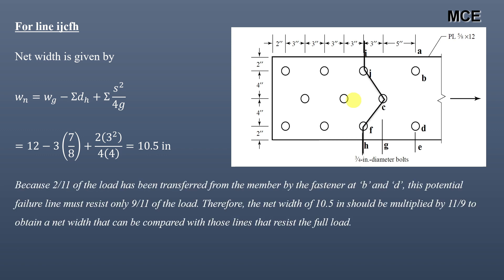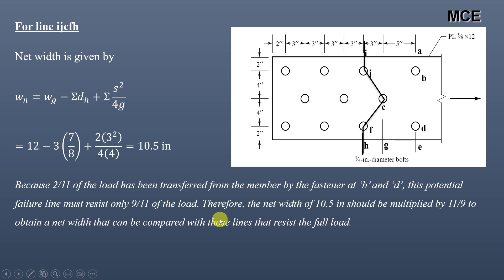Before the load reaches failure line I-J-C-F-H, some load would already have been transferred by the fasteners at B and D. There are 11 fasteners total in this connection, meaning this potential failure line resists only 9/11 of the load. Therefore we multiply the net width of 10.5 inch by 11/9, giving an adjusted net width of 12.83 inch.